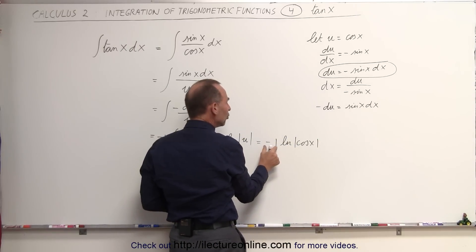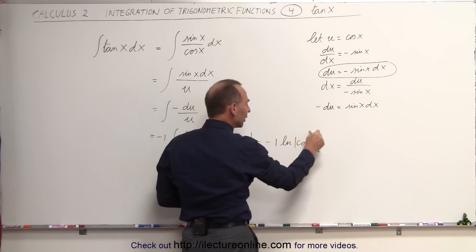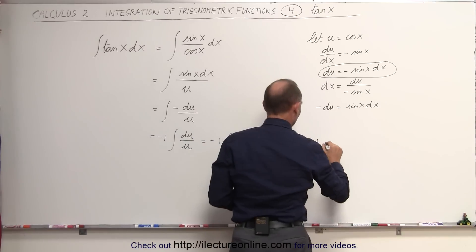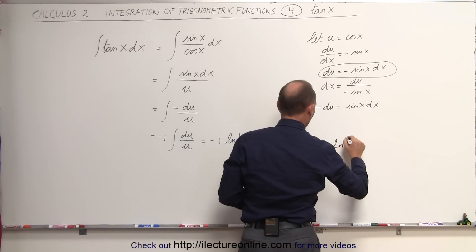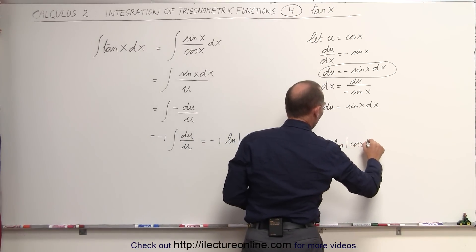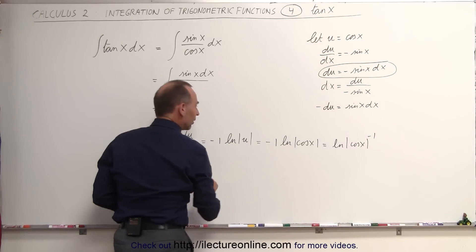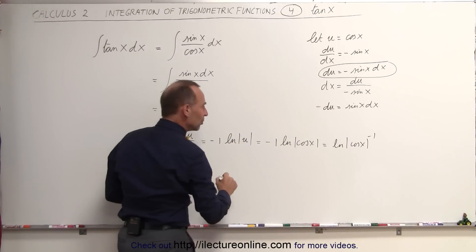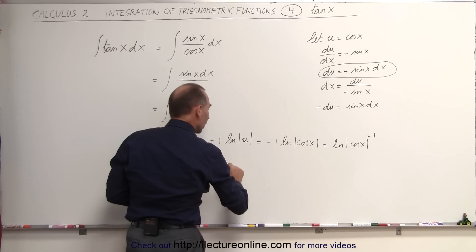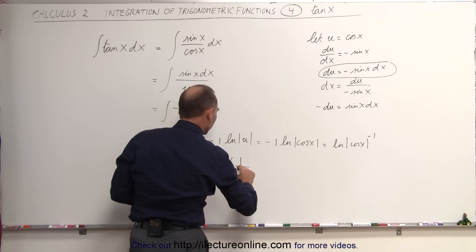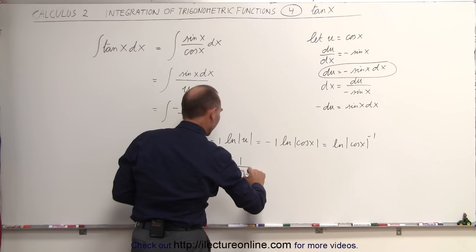And now if we use the rules of logarithms and we bring that over here, we can write this as the natural log of the cosine of x raised to the minus 1, which is equal to the natural log of 1 over the cosine of x.